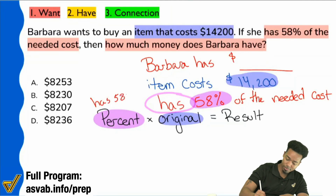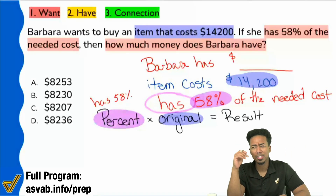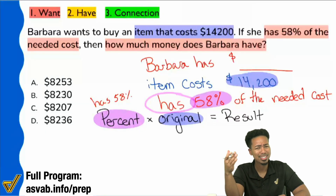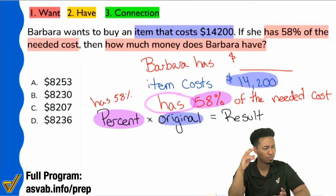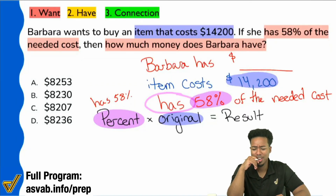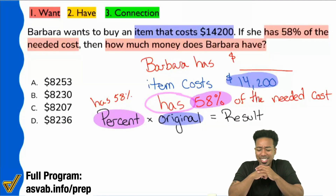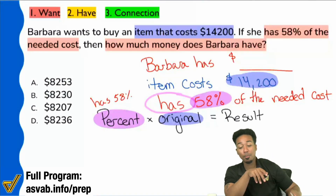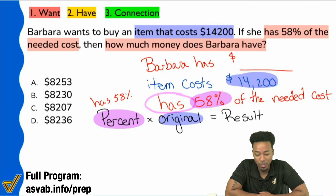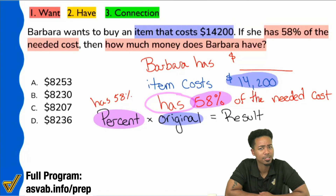Before I continue, pop quiz — what was that main idea I gave you about the percent formula? The percent you apply is the result that you get. Who remembers me saying that? The percent you apply is the result that you get.